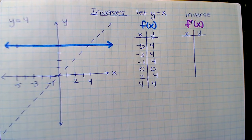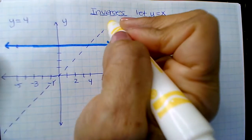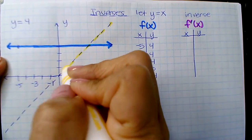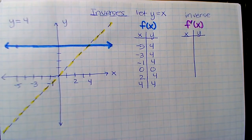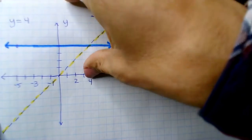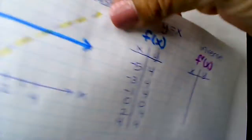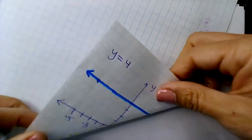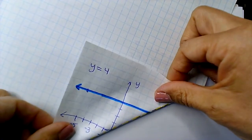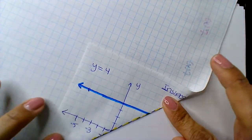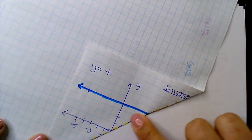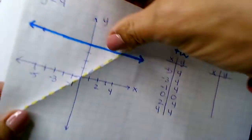So if I fold on that line, right, so this is my inverse y equals x. If I fold on it, but I'm first going to fold it this way so that I can get a nice clean line. Okay, so now let me fold it this way.